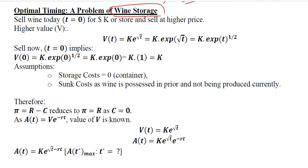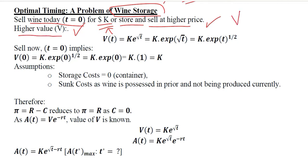If one sells wine today — that is, no time has passed, t is equal to zero — its price will be k dollars. The other option is to store the wine and sell it at a price higher than k dollars. That higher value is represented by k later, so the value later is greater than the value now.